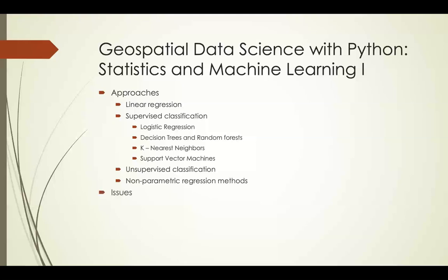Throughout the course we'll talk about specific issues including overfitting, which is a big one. It occurs when your model predictions fit your training data very well because they're fitting random error in that training data, causing them to be less accurate when making predictions against unknown data. This is a big problem in both statistical inference and machine learning, and it can be addressed partly through careful a priori model selection — using our a priori knowledge to come up with a carefully selected set of candidate models to fit — when our goal is statistical inference from a sample to a population.